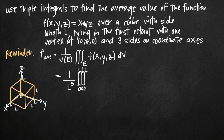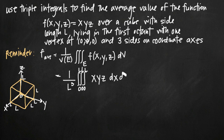We plug in our function xyz for f(x, y, z). Because we have the same limits of integration for each variable — always integrating from 0 to l — it doesn't matter in which order we integrate, so we can say dx dy dz. Now we've got our triple integral set up to find the average value of xyz over this cube.